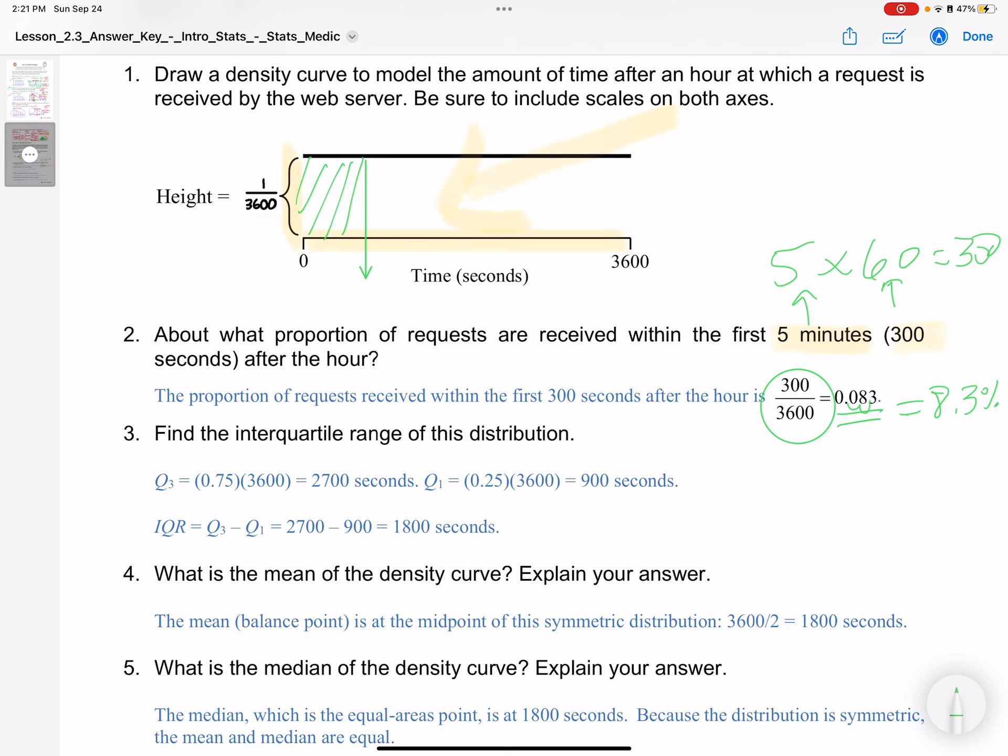Find the IQR of this distribution. IQR is Q3 minus Q1. Q means quartile, and that means quarter. Think about a quarter, it's worth 25 cents. So Q1 is 25%, Q3 is 75%. There's three quarters. So 75% of the data minus 25% of the data. Step one is to find Q3. So 75% of the data times 3600 is 2700, and 25% of the data times 3600 is 900. Then we're going to find the IQR, which is Q3 minus Q1, and that gets you 1800 seconds.